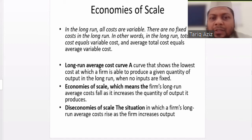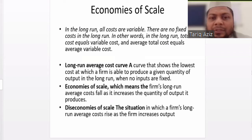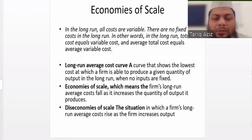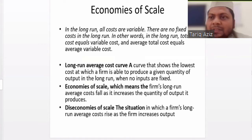In the long run, the average cost curve initially decreases. A curve that shows the lowest cost at which a firm is able to produce a given quantity of output in the long run, when no inputs are fixed. Economies of scale means if the long run average cost is falling, that situation is called economies of scale. The firm is experiencing or reaping the benefit of economies of scale.